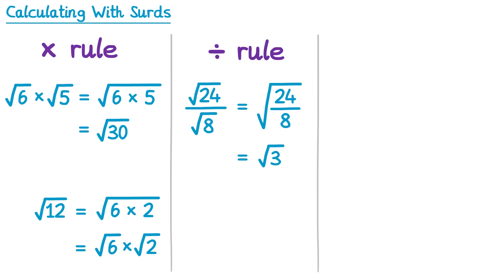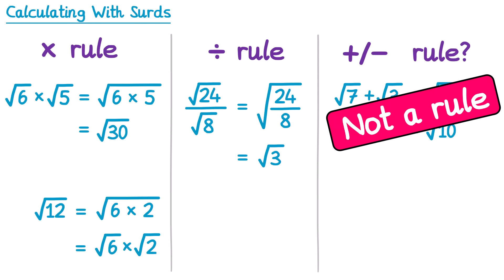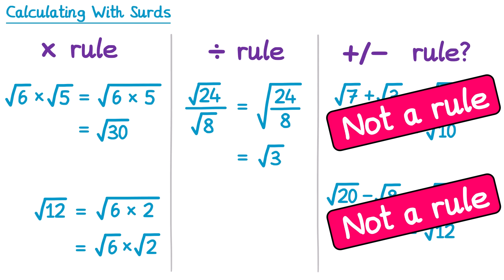So we have a multiplication rule and a division rule — but what about addition and subtraction? If we did the square root of 7 plus the square root of 3, would that give us the square root of 10? Unfortunately it doesn't. It would be very convenient if it did, but this is not a rule, so you can't add surds together in this way. And it's the same for subtraction — the square root of 20 minus the square root of 8 cannot be written as the square root of 12. These rules work for multiplication and division, but not for addition and subtraction.